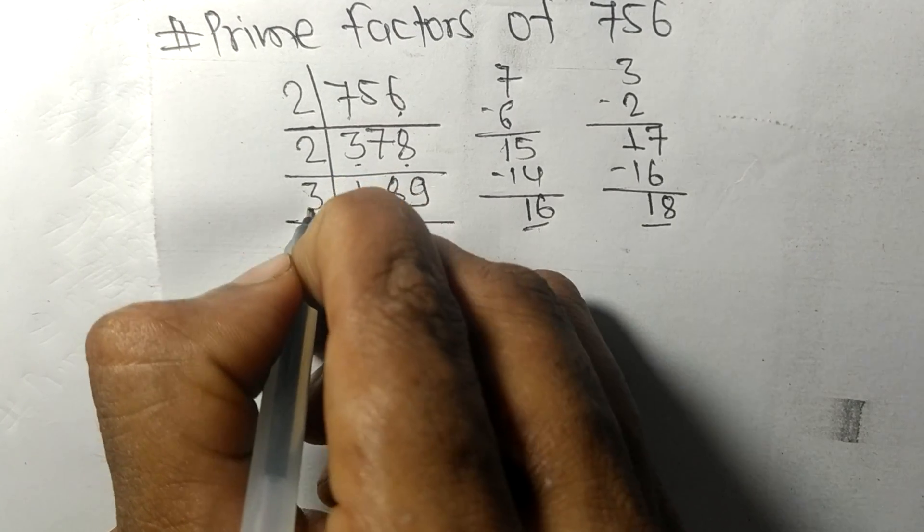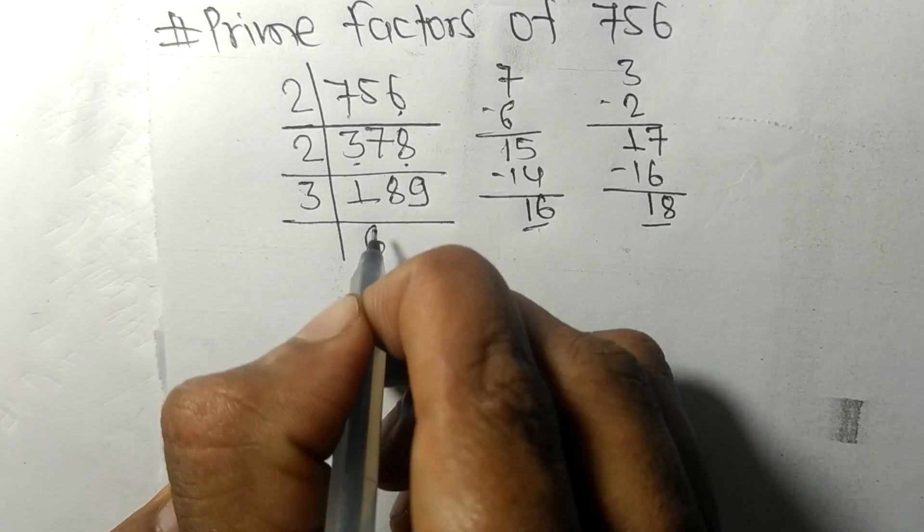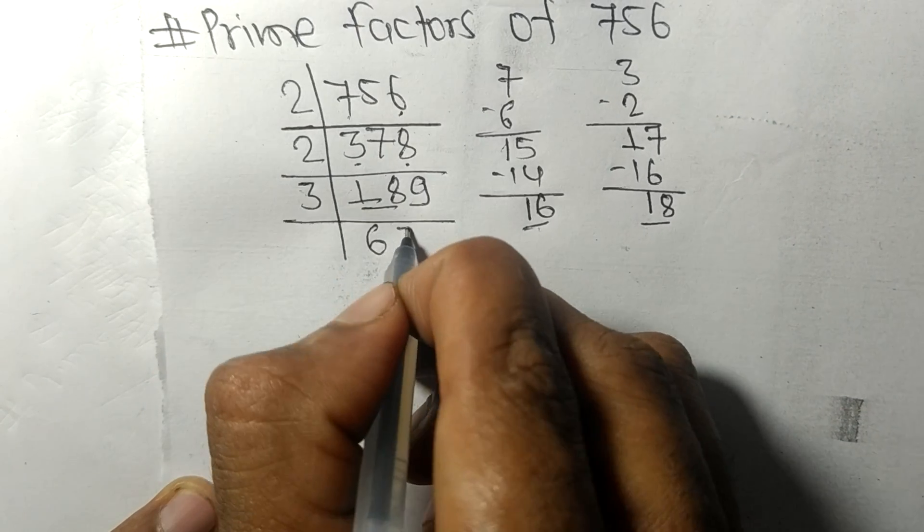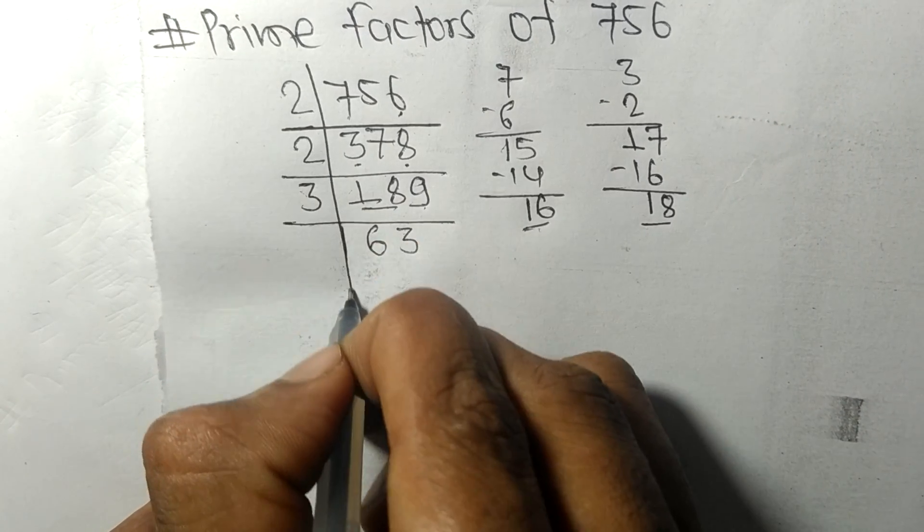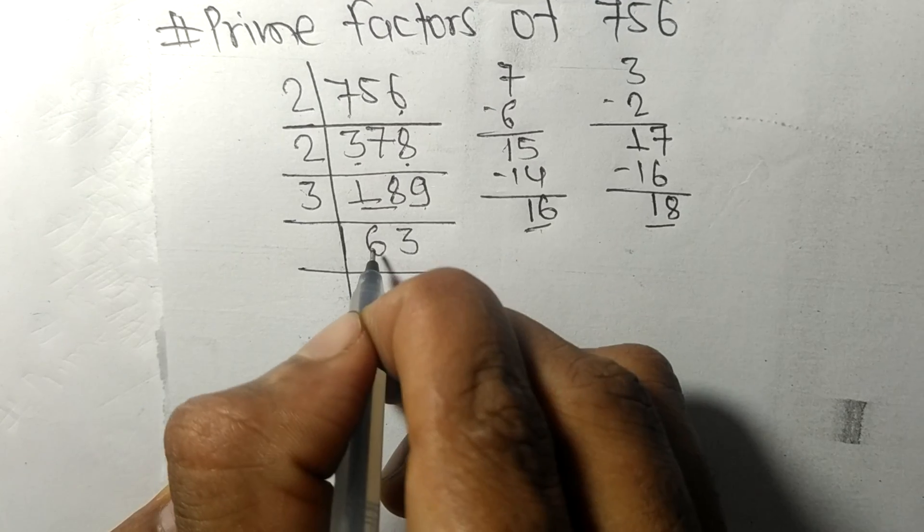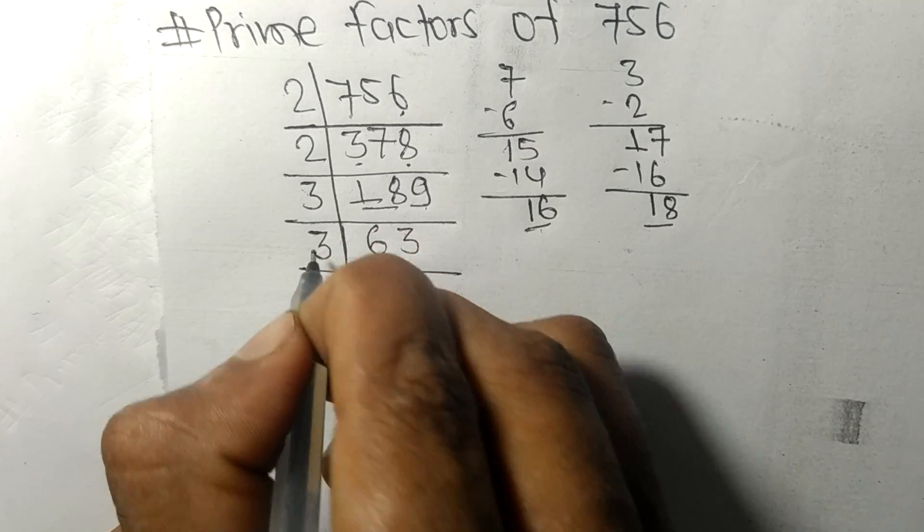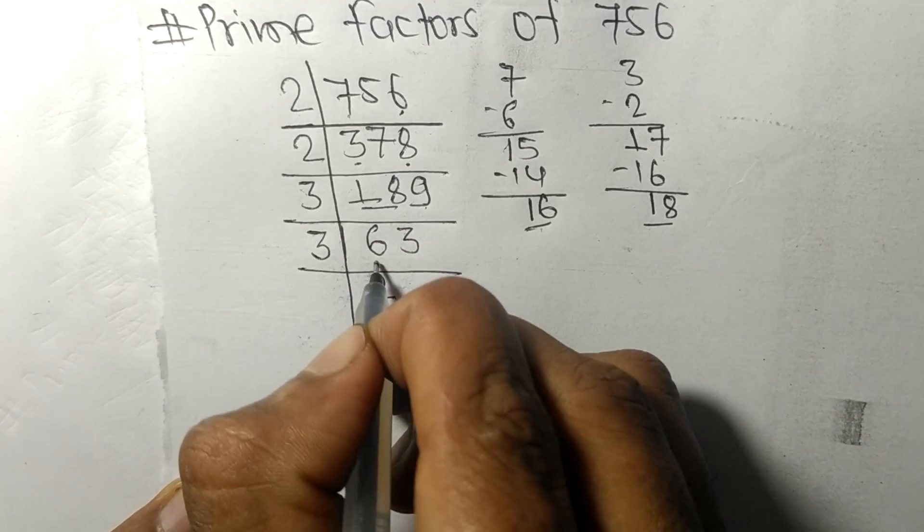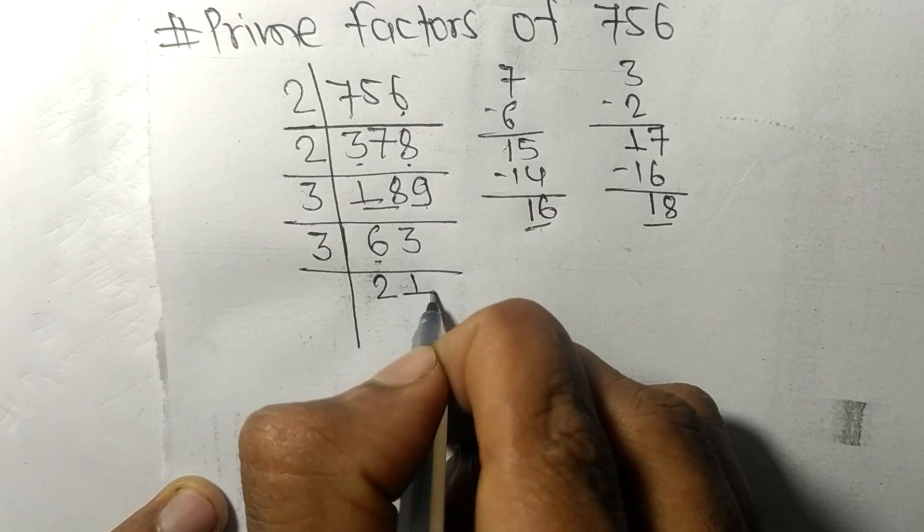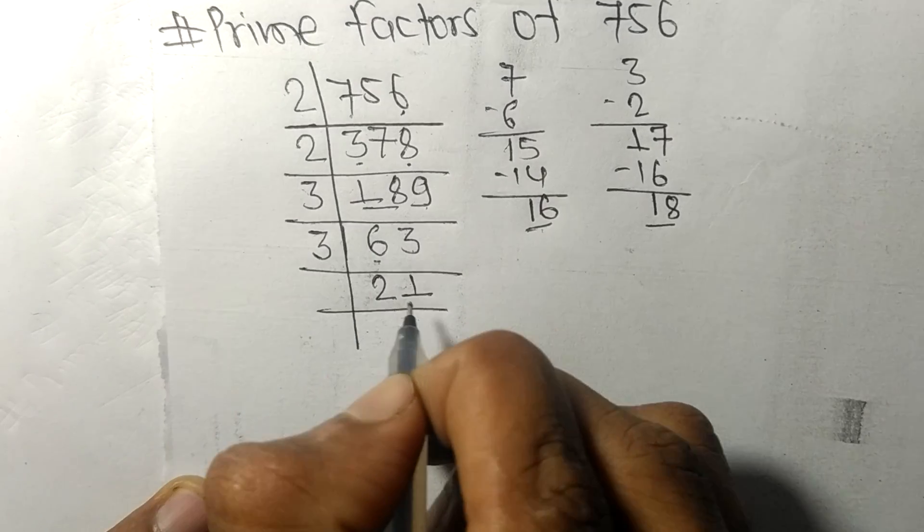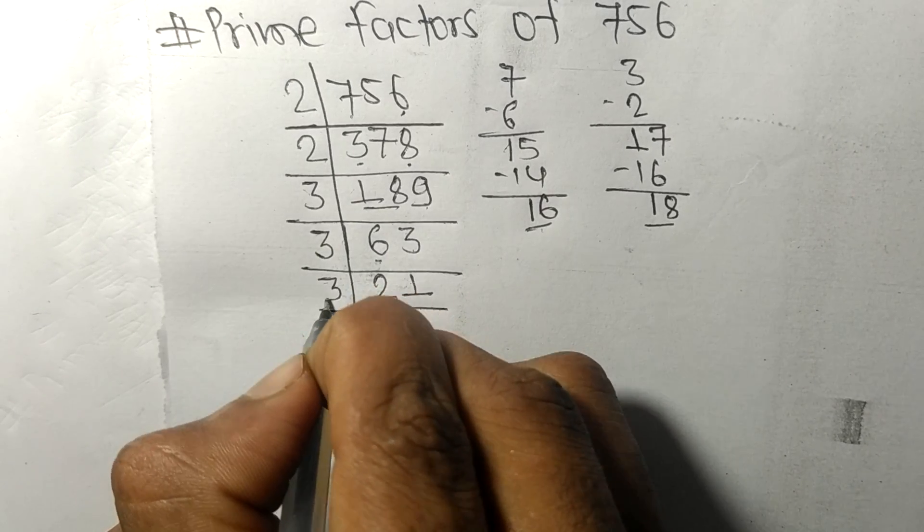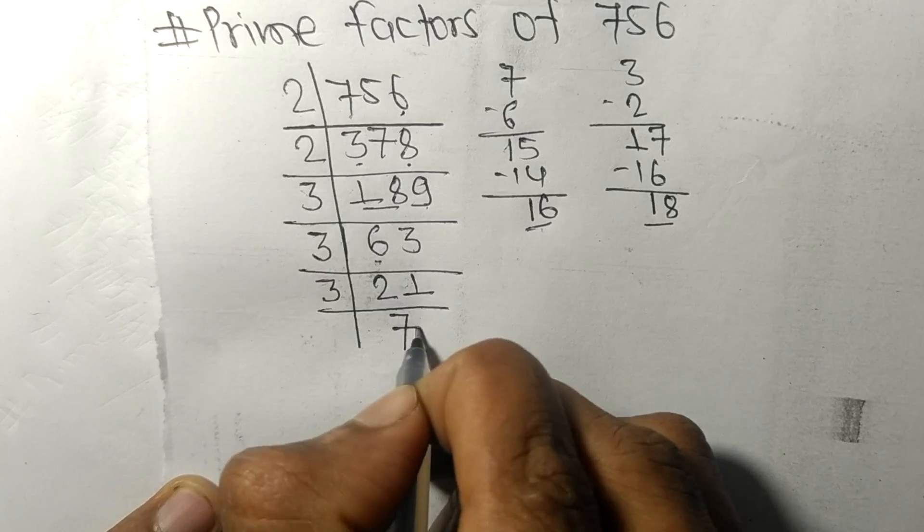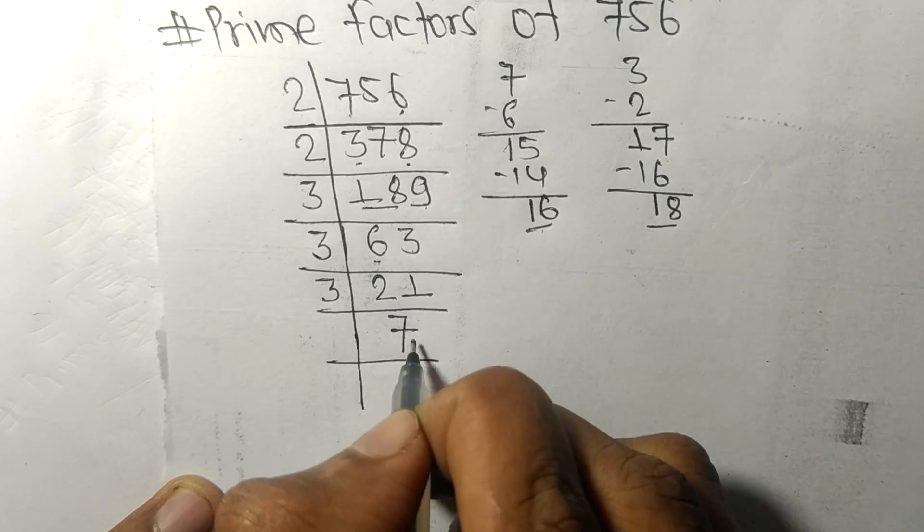3 times 2 equals 6, 3 times 1 equals 3. 21 divisible by 3 we get 7. Now 7 divided by 7 we get 1.